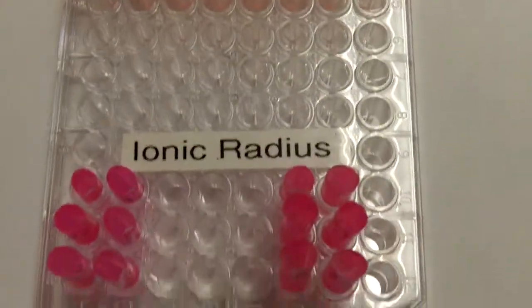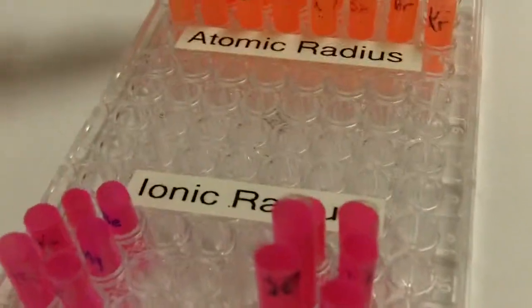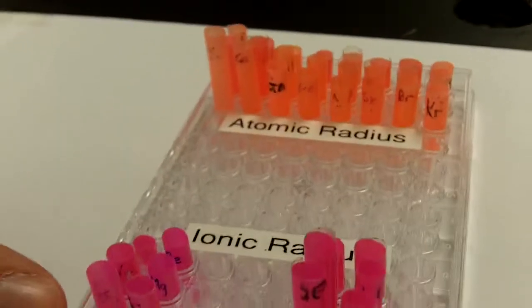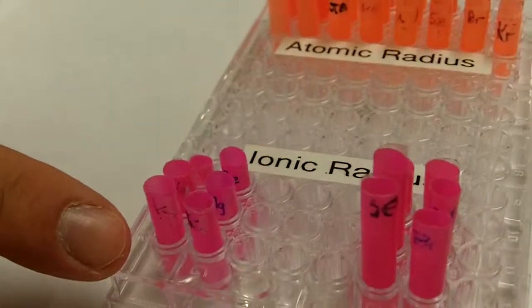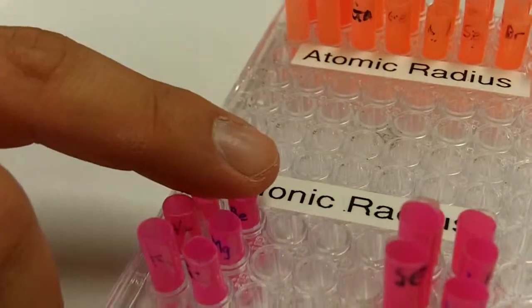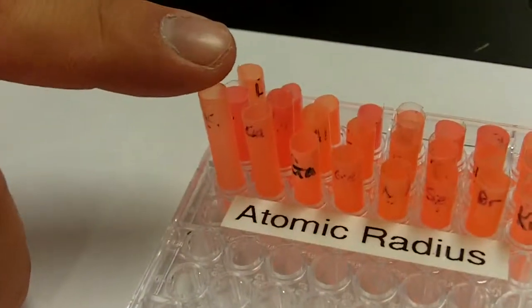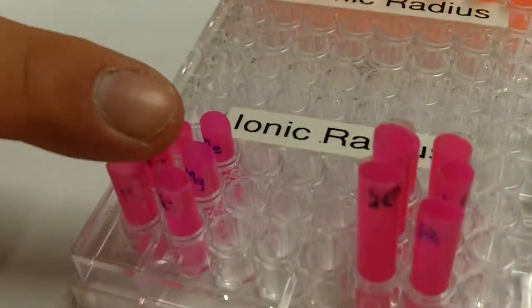Lastly, the ionic radius. So these are lined up with their original atomic counterparts. So one of the things that hopefully you can see from this is that these elements here, which are the alkaline and the alkaline earth metals, are smaller than their original atomic counterparts. And they're smaller because they have lost an electron.